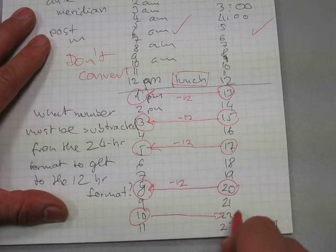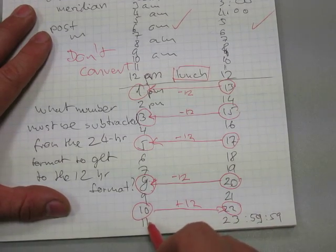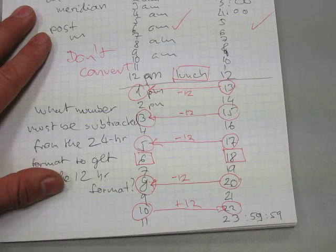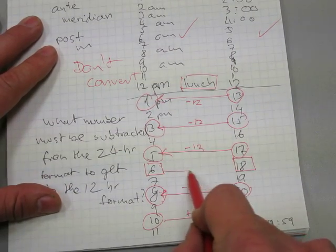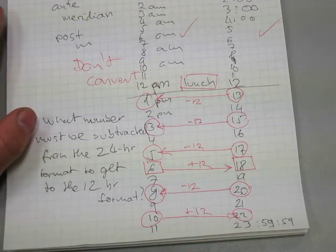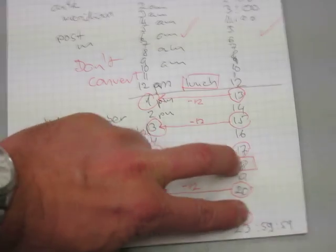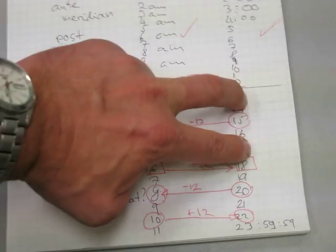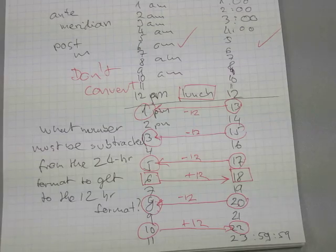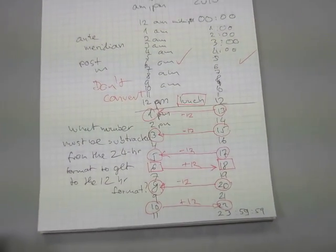And if you want to convert from the 12-hour format to the 24-hour format, from this number to get to this number, you are going to have to add 12. The same works with this number, 6 to 18, you have to add 12. So just keep in mind which way you are going, whether you are converting from here to here or from here to here. You have to either add 12 or subtract 12. Don't get messed up, just practice it. Good luck with it.